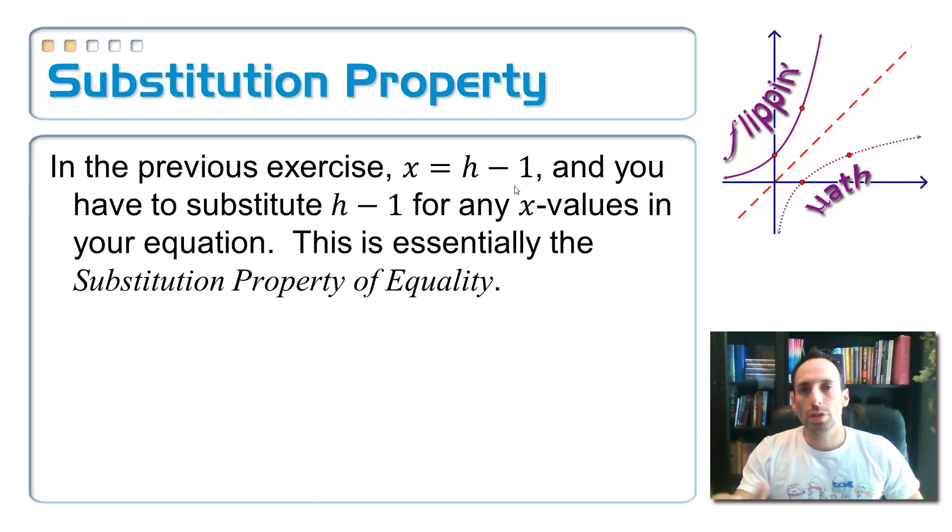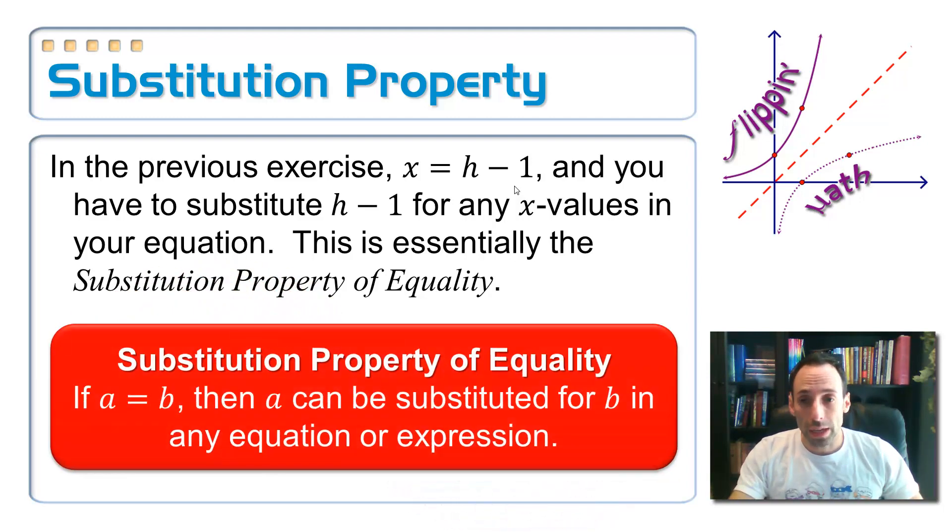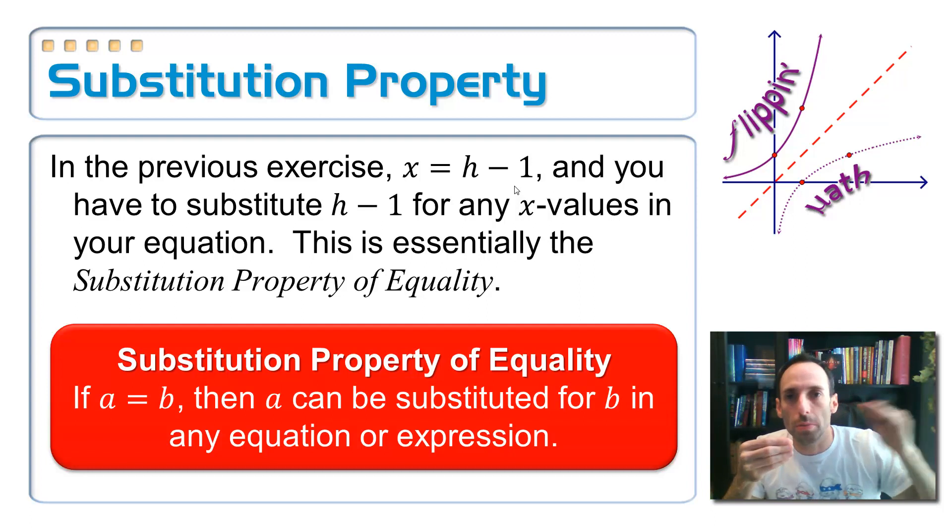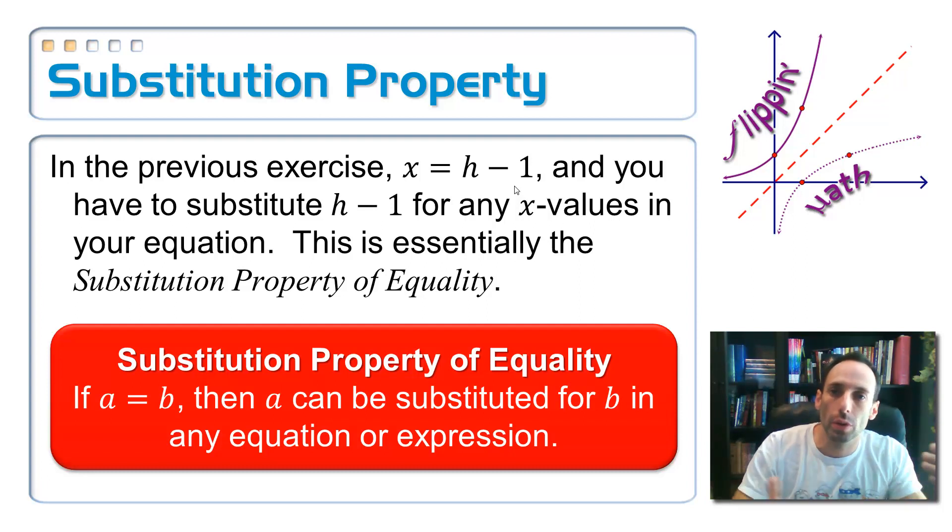So in geometry, you call this the substitution property of equality and you often used it in proofs as one of the reasons why you could do something. And what you were doing is if two things were equal, if a was equal to b, you could take a out and you could substitute b into its place for any expression or equation that had a in it. Or vice versa, you could take b out and stick a in its place because they were equal to each other.